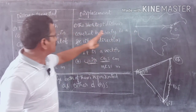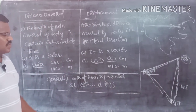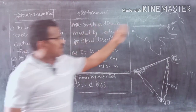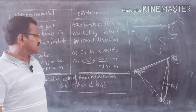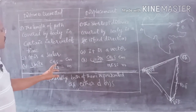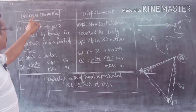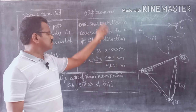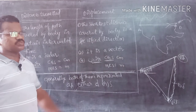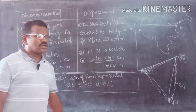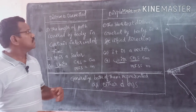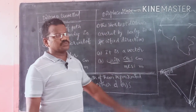Distance traveled is a scalar quantity because we cannot determine the direction. Displacement is a vector quantity because it gives the exact direction and exact magnitude. Both are lengths, so the CGS unit of distance traveled is centimeter and the MKS unit is meter. Similarly, the CGS unit of displacement is centimeter and MKS unit is meter. Both distance traveled and displacement are generally represented by the letter d or s. In the next video, we will discuss graphical representations and problems on distance traveled and displacement.